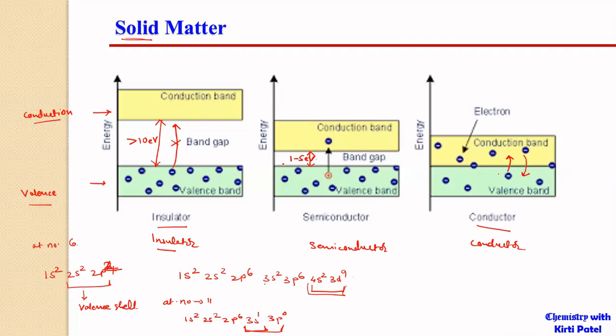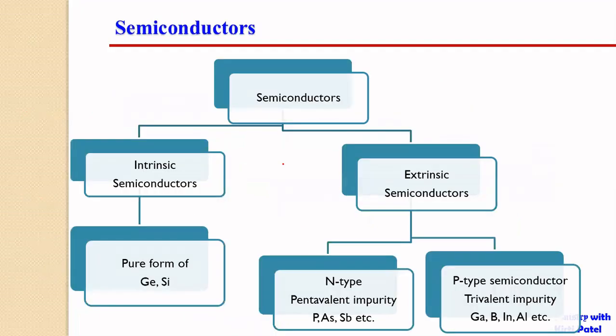In semiconductors there will be some conduction of electricity. These materials are called semiconductors — they are not as good as conductors and not as bad as insulators; they are in between. The materials commonly used as semiconductors are generally germanium or silicon.